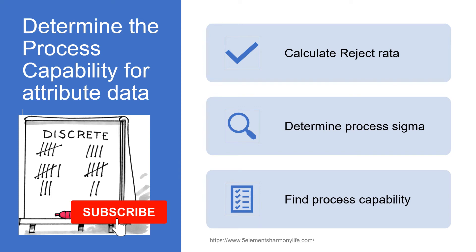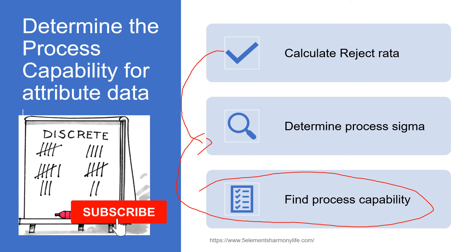There are quite a number of opinions regarding whether CPK or PPK for attribute data can be calculated. Some experts will tell you to use yield data. However, once we understand that process capability study is used to estimate the potential reject from a process, my take is there is no need to calculate PPK anymore — we would already know the reject rate of the attribute data directly. You can use the reject rate or PPM to reverse-engineer the process sigma and find the process capability from the table shown in the earlier slides.